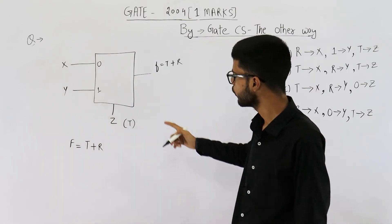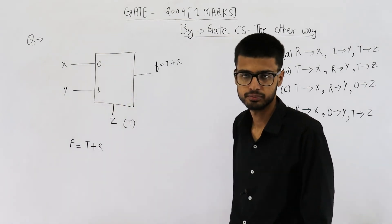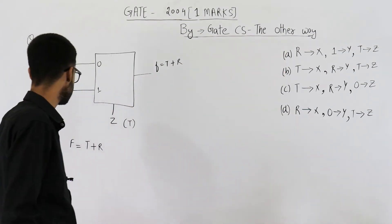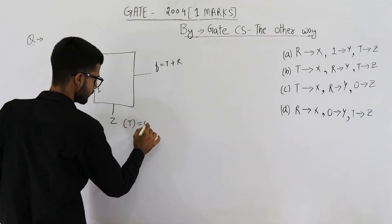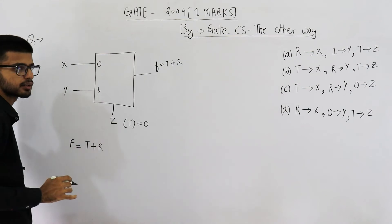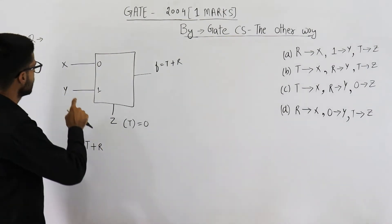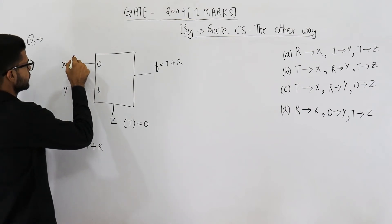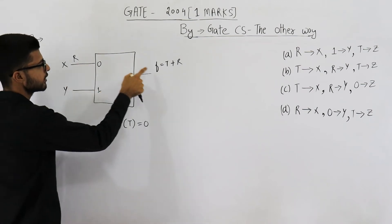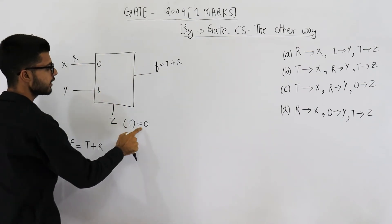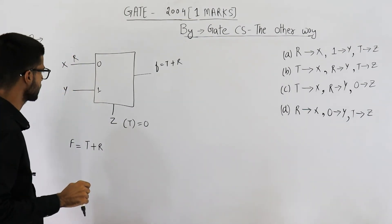We have the multiplexer only to select between these two inputs. Now let us see what x and y are. If the value of t is 0, in that case t + r will be r only. That means x has to be r. When t is 0, this input will be selected and given as output, and the output must be r. So that is the reason x is r.